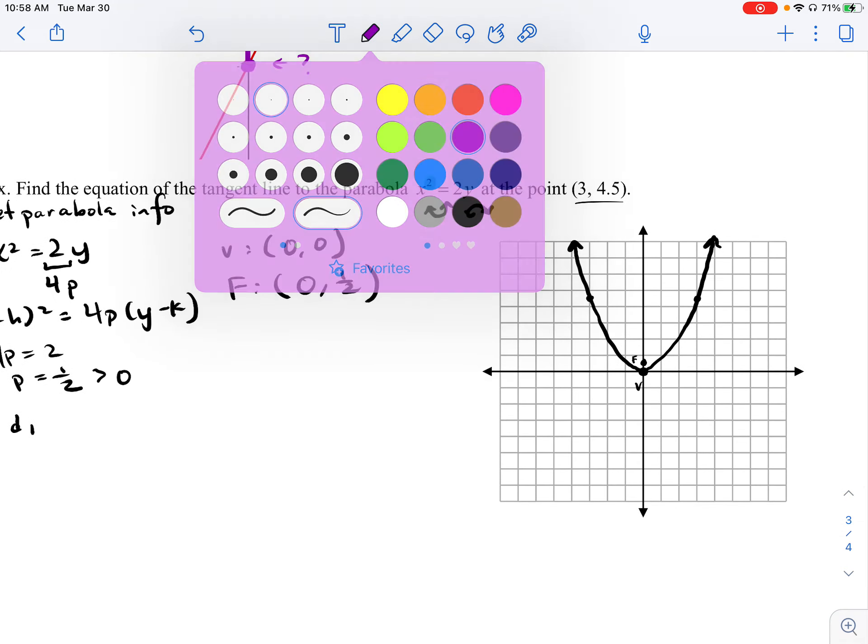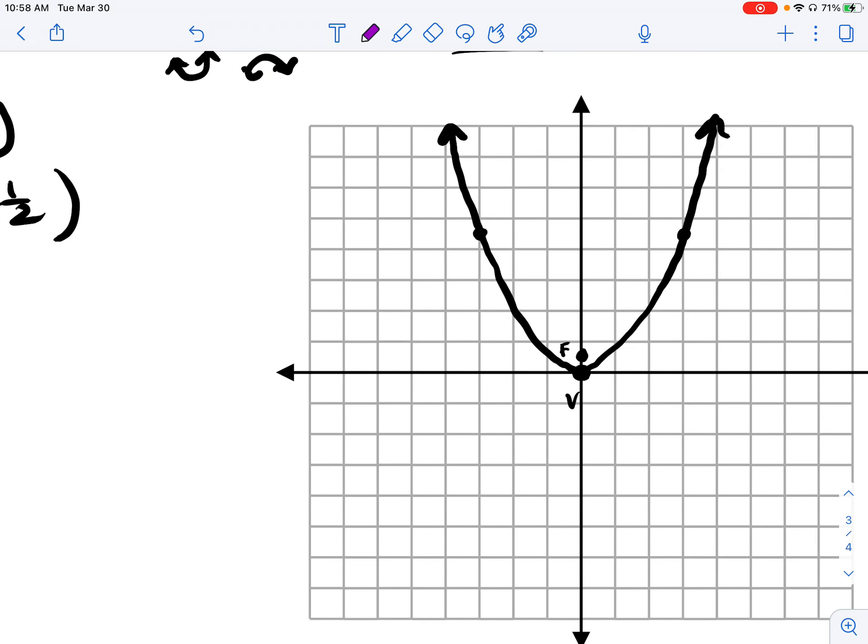D1 is going to be the distance from that point of tangency to our focus. So this point here was (3, 4.5). So the distance from the point of tangency to our focus. How can we find that distance?